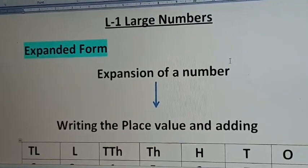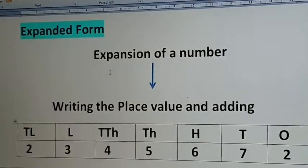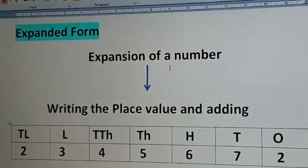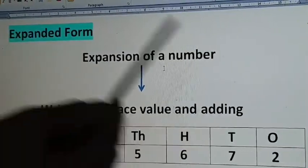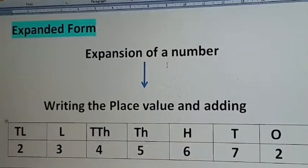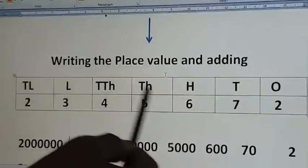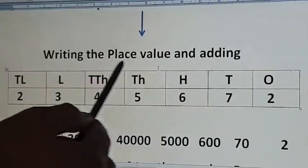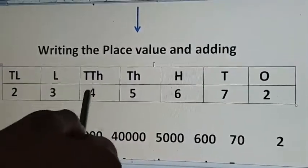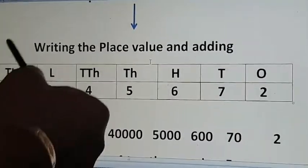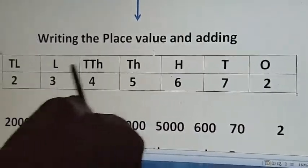First topic: expanded form. Expansion of a number means writing the place value and adding. Take one example. Look at this number here. Always write the place value chart and write the number under the place value chart, so it is easy to read.